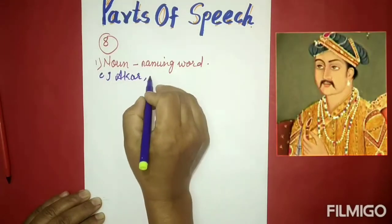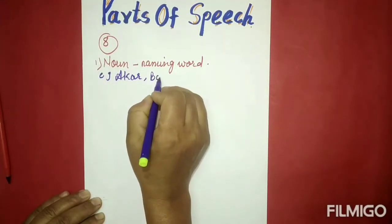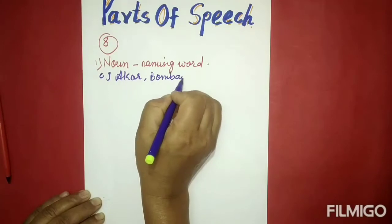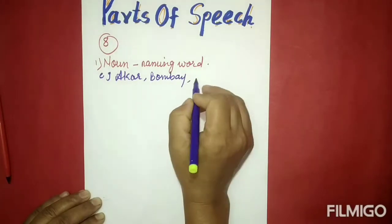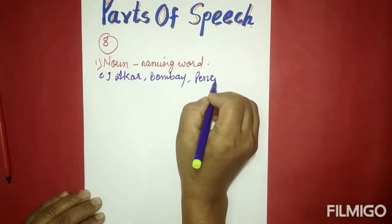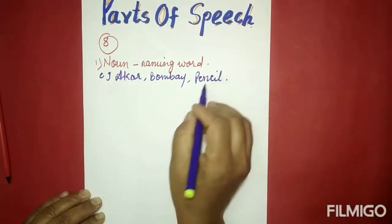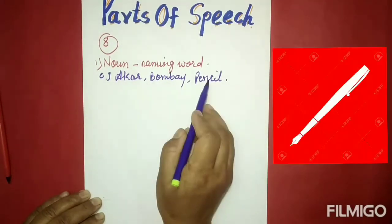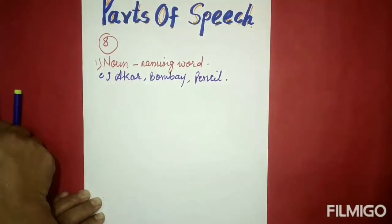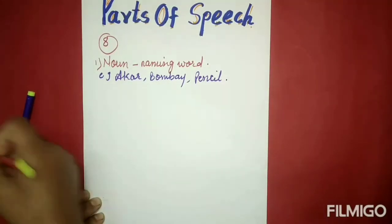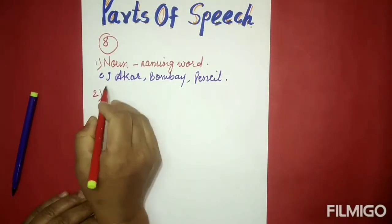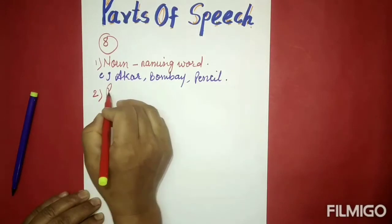Akbar, Bombay, Pencil — these are nouns. Now the second part of speech is pronoun.